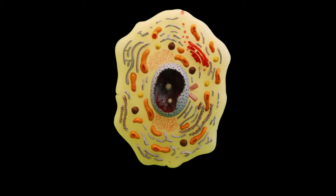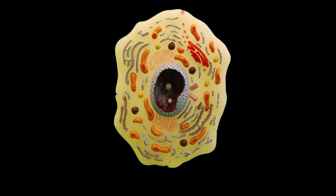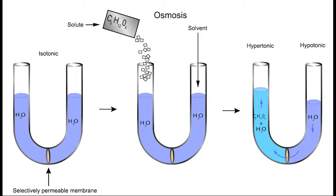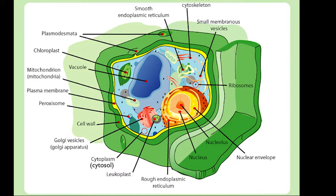The plasma membrane is the outermost part of the animal and animal-like cells and is surrounded by cell walls in plants and plant-like cells. In all cells, the plasma membrane has the quality of being selectively permeable and controls movement of substances into and out of the cell. Cytosol is a gel-like fluid which supports organelles that play specific roles in the day-to-day functioning of the cell.